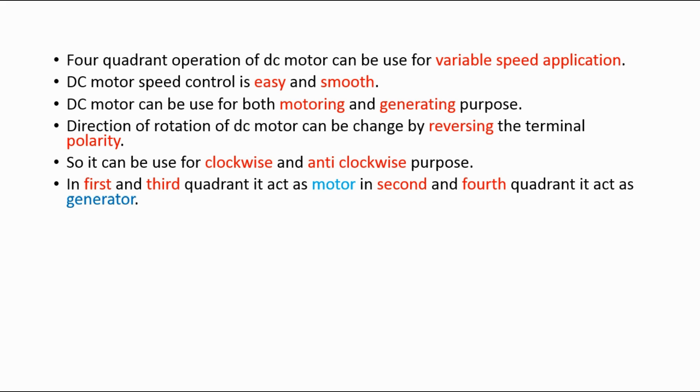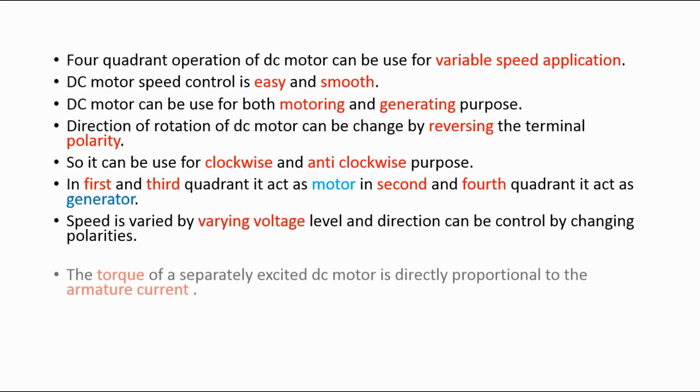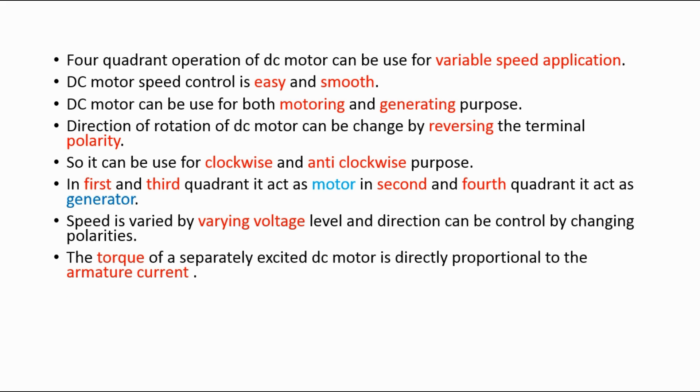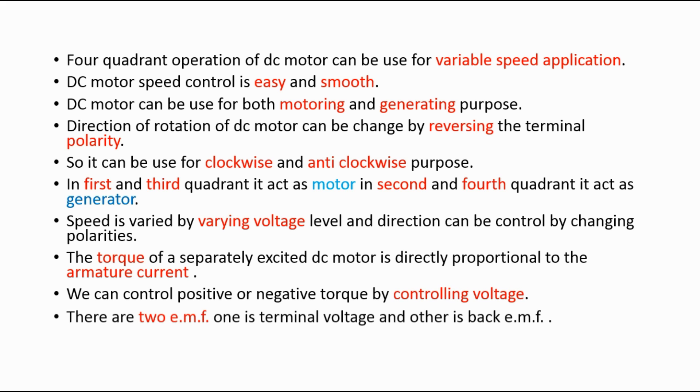In first and third quadrant it acts as motor; in second and fourth quadrant it acts as generator. Speed is varied by varying voltage level and direction can be controlled by changing polarities. The torque of a separately excited DC motor is directly proportional to the armature current. We can control positive or negative torque by controlling voltage.